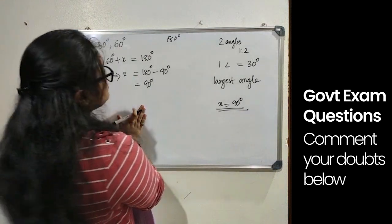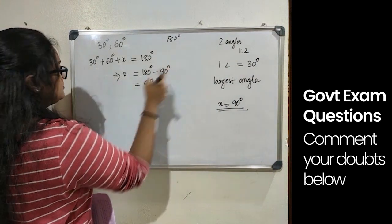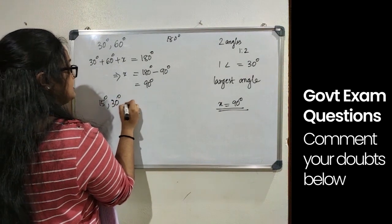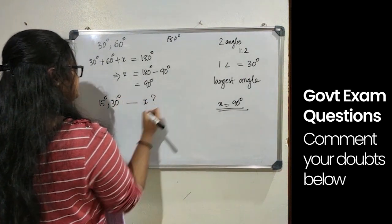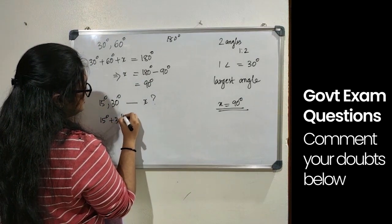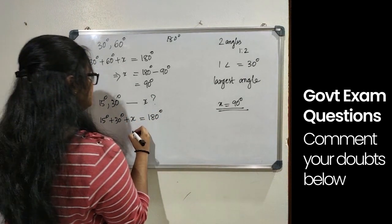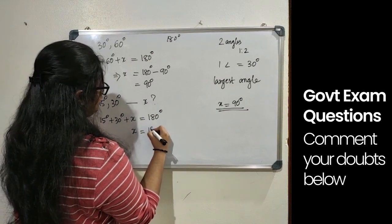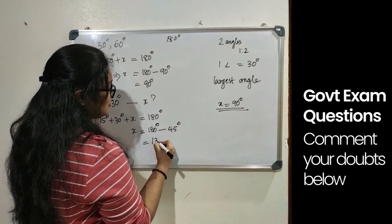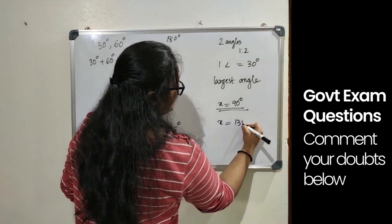Considering another case, if we take the second angle to be 30 degree, then first angle will be 15 degree. So we get 15 degree and 30 degree, we need to find the third angle. 15 plus 30 plus X equals 180 degree. X equals 180 degree minus 45 degree and equals 135 degree. So X can be 135 degree.